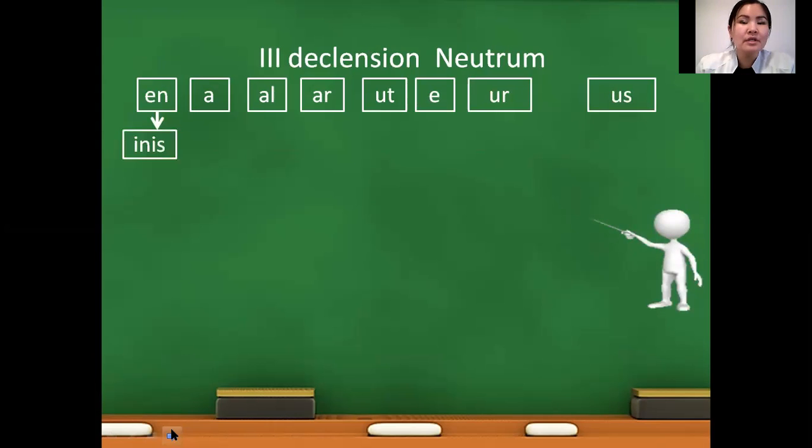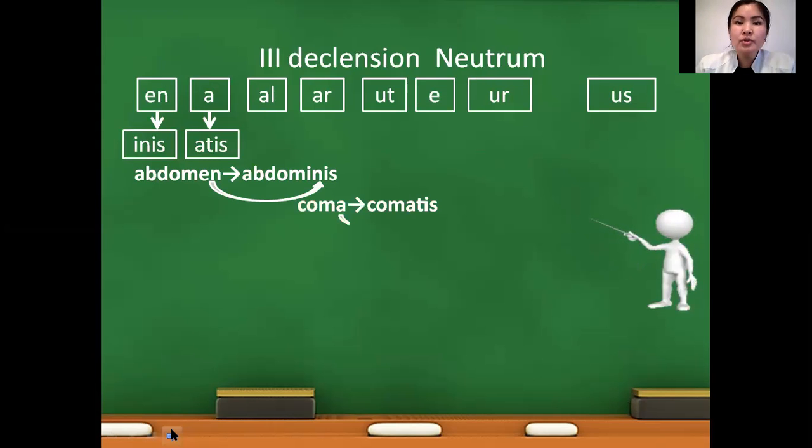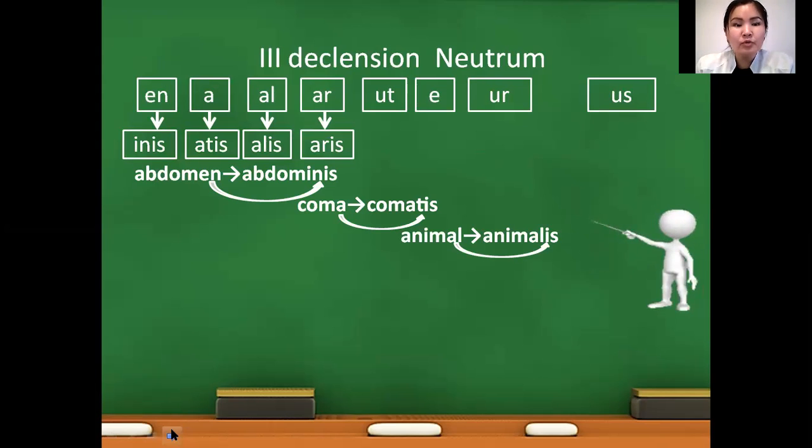For constructing genitivus, EN we change to inis: abdomen to abdominis. AT we change to atis: coma to comatis. AL we change to alis: animal to animalis. Ending AR we change to aris: calcar to calcaris. And in case of ending AR we have one exception: hepar. For hepar we use ending atis: hepar to hepatis.